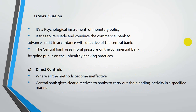The third qualitative tool is moral suasion. This is a psychological instrument used in monetary policy. The government tries to persuade and convince commercial banks to organize credit in accordance with the directions of the central bank. The central bank may also use pressure on commercial banks by going public on unhealthy bank practices.